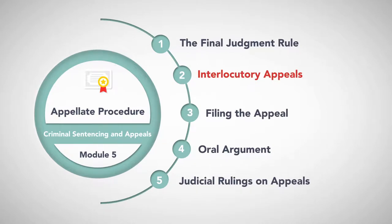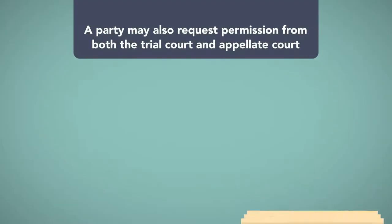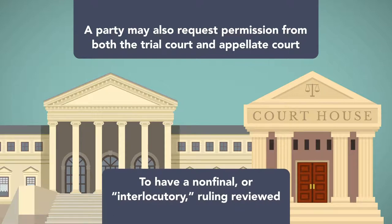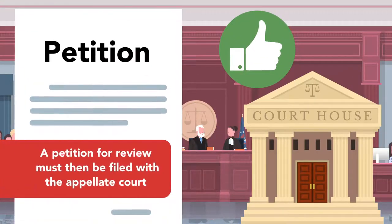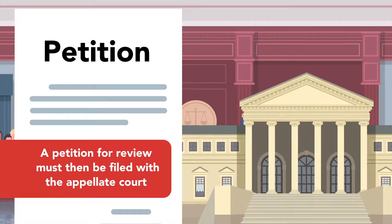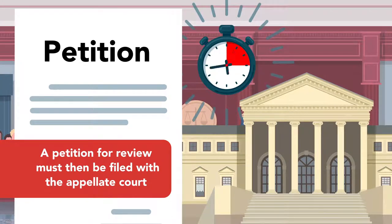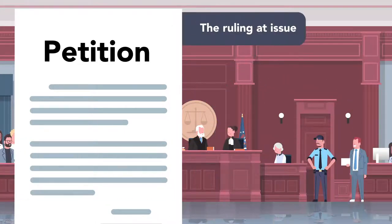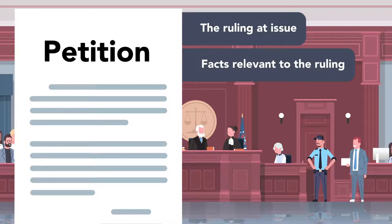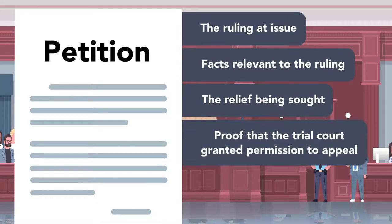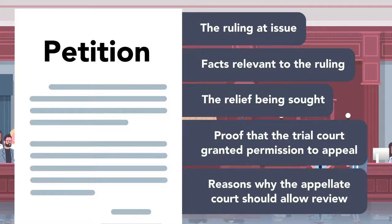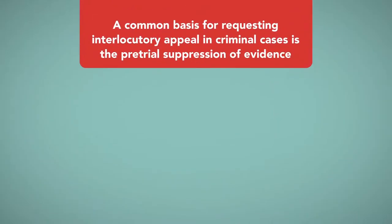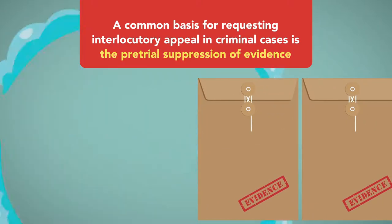Interlocutory Appeals. Even when not covered by the Collateral Order Doctrine, a party may also request permission from both the trial court and appellate court to have a non-final or interlocutory ruling reviewed. If the trial court grants the request, a petition for review must then be filed with the appellate court within a statutory time frame. A petition seeking review of an interlocutory ruling must contain the ruling at issue, facts relevant to the ruling, the relief being sought, proof that the trial court granted permission to appeal, and reasons why the appellate court should allow review of the non-final judgment. A common basis for requesting interlocutory appeal in criminal cases is the pre-trial suppression of evidence.